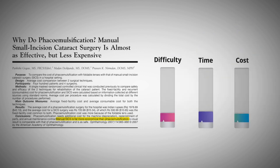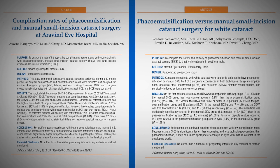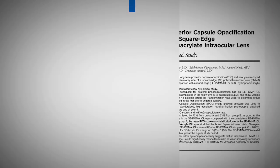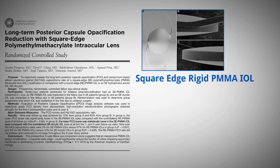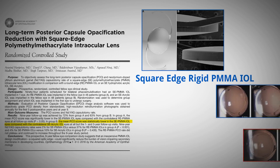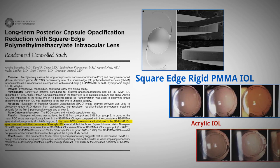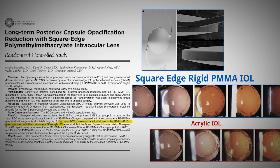Owing to shorter operative time, lower tech requirement, and most of all low cost, MSICS does not compromise quality for quantity and has been shown to have similar rates of endophthalmitis and similar visual acuity outcomes. Also, with square edge rigid PMMA IOL implantation, posterior capsular opacification can be reduced, which is a significant cause for visual loss post-operatively.